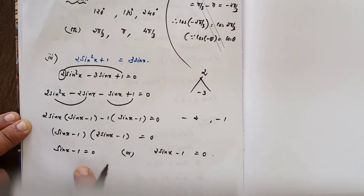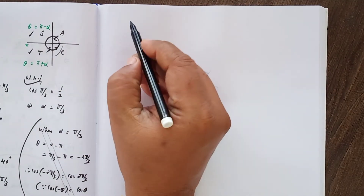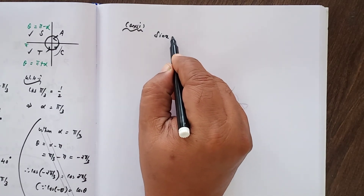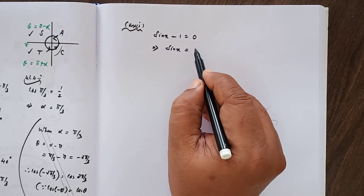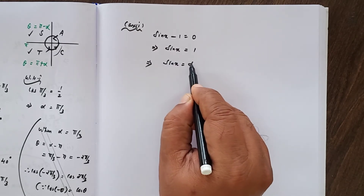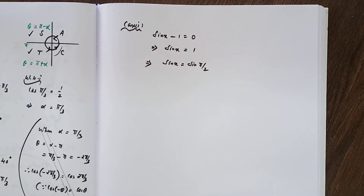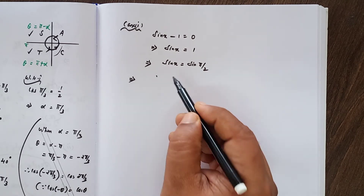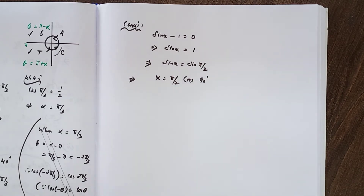Case 1: sinx minus 1 equals 0, which implies sinx equals 1. We know sin(π/2) equals 1, so x equals π/2 or 90 degrees.